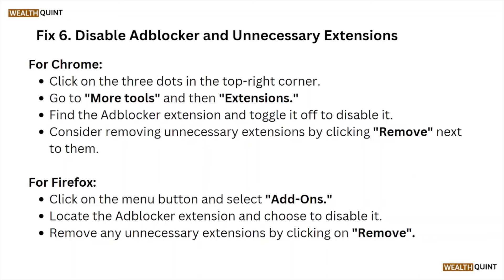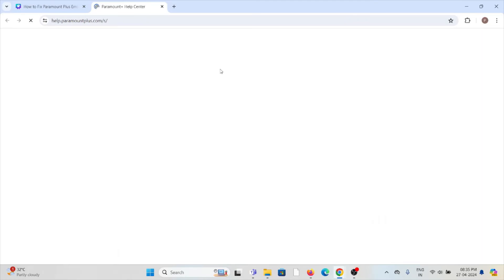Fix number six is to disable the ad blocker and unnecessary extensions. For Chrome, go to the three dots in the top right corner, go to More Tools, then Extensions. Find the ad blocker extension and toggle it off to disable it. Remove any unnecessary extensions by clicking Remove next to them. For Firefox, click the menu button, select Add-ons, find the ad blocker extension, and choose to disable it. Remove any unnecessary extensions as well.